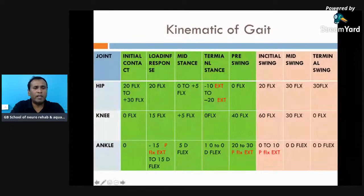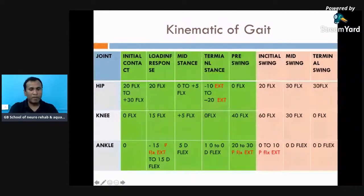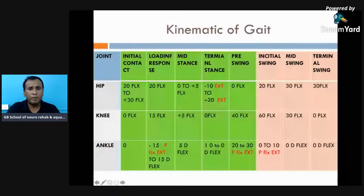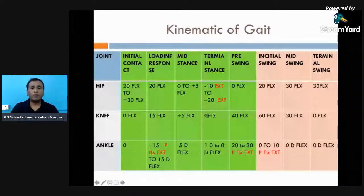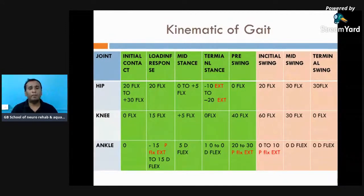There is always a range of variation — approximately 5 to 10 degrees — in all gait kinematics, because they depend on factors such as height. For example, hip flexion at initial contact can range from 20 to 30 degrees; mid stance hip goes from 0 to 5 degrees; dorsiflexion and plantar flexion range from 5 to 15 degrees; terminal stance ankle may range from 10 degrees plantar flexion to 0; pre-swing ankle plantar flexion ranges from 20 to 30 degrees.